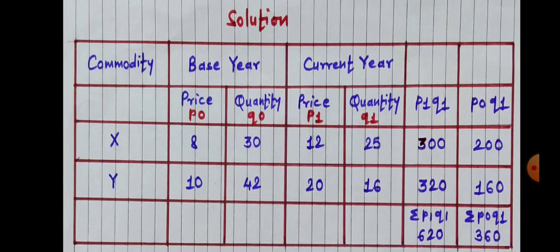P1Q1: 12 into 25 equals 300; 20 into 16 equals 320. After that, we have to find out Sigma P1Q1, which is the summation of all P1Q1. So 300 plus 320 equals 620. Sigma P1Q1 is equal to 620.